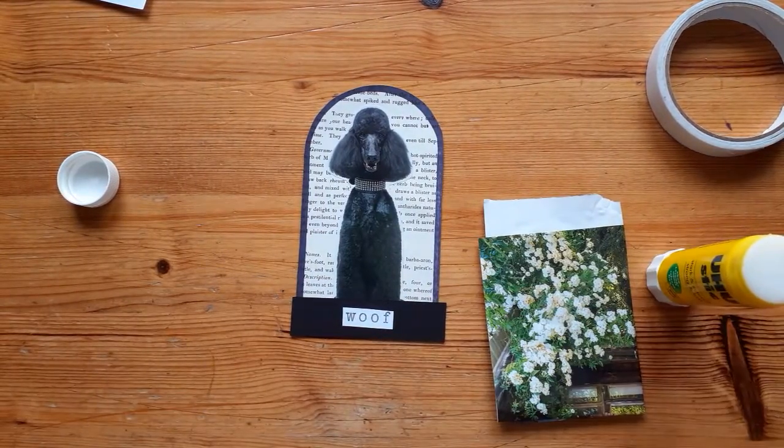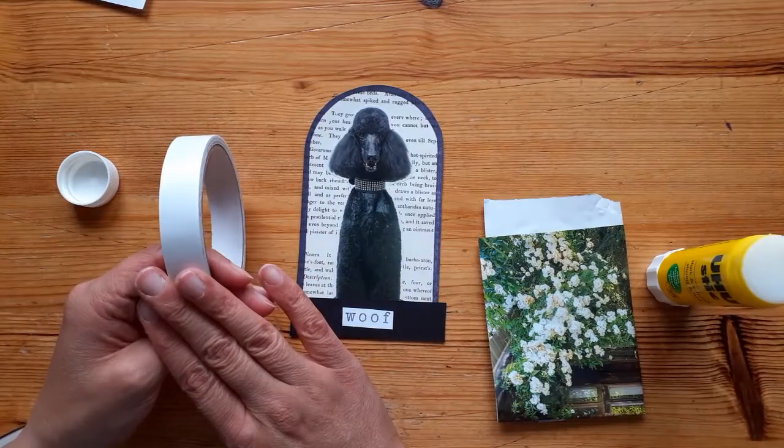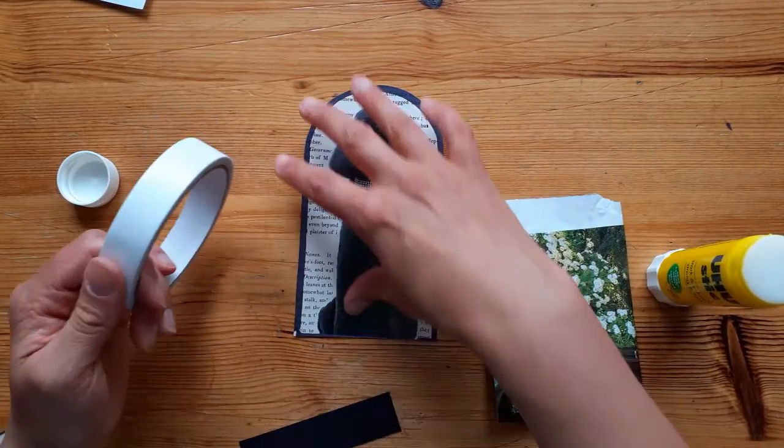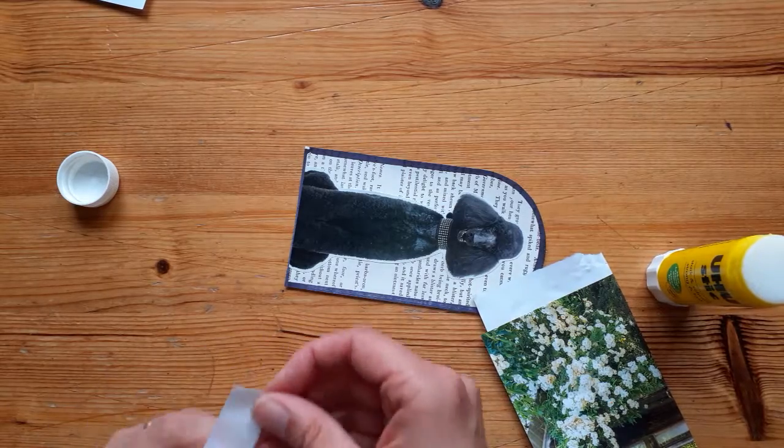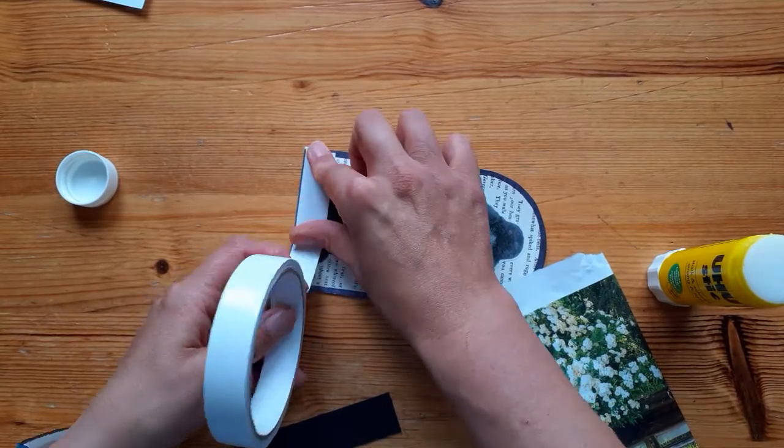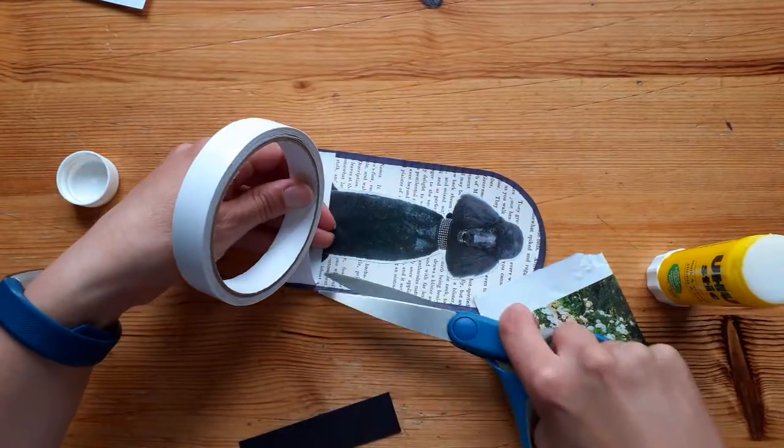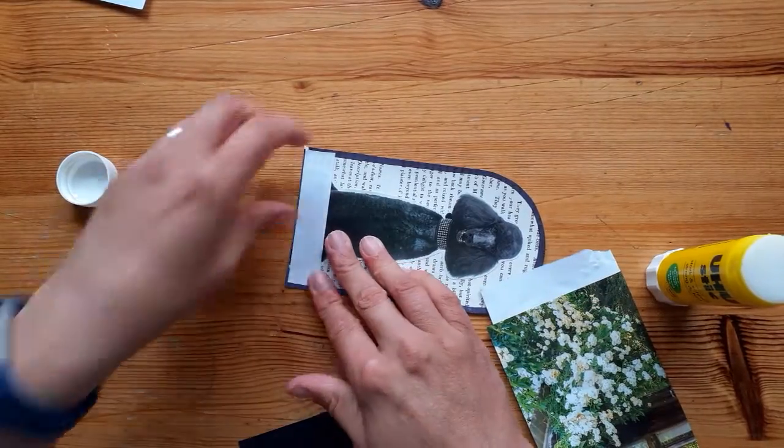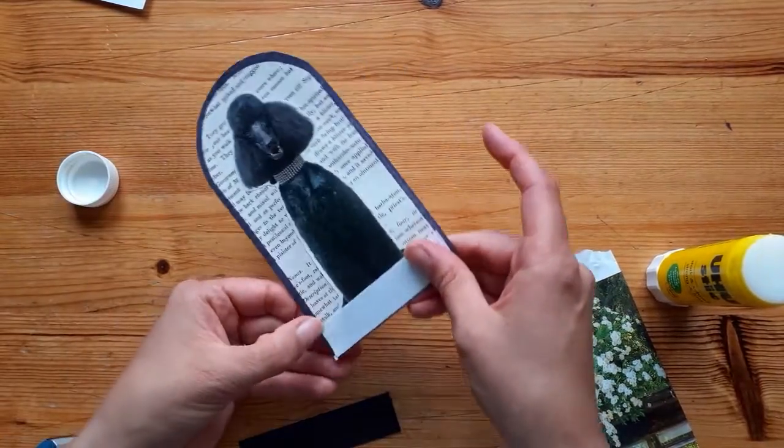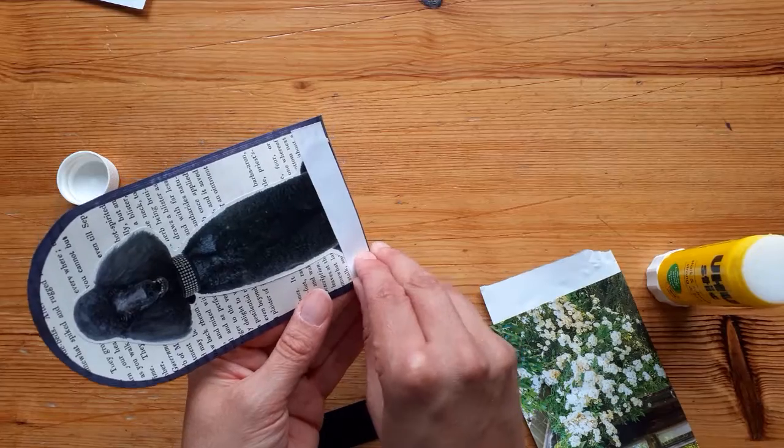Now I mentioned earlier you can use double-sided tape with this and that's what I'm going to use along here. I'm just going to stick that along the bottom, obviously make sure that the width is right or cut it down to size. You can glue it but I just fancied using a bit of double-sided tape here.